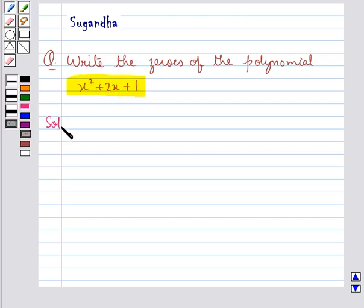Let's move on to the solution. The given polynomial is x squared plus 2x plus 1.